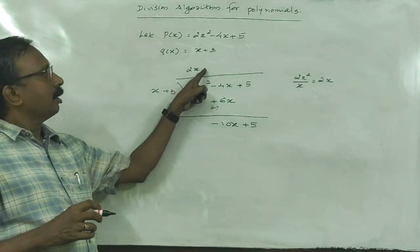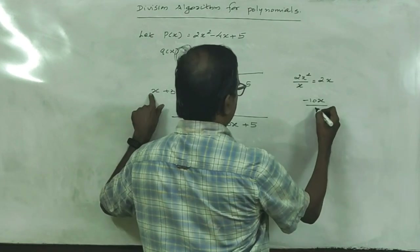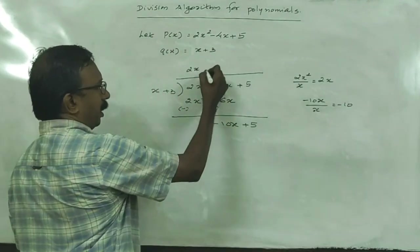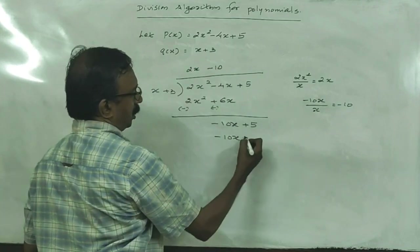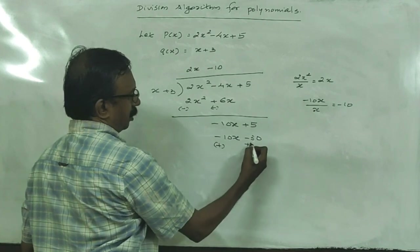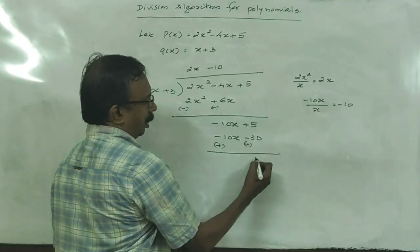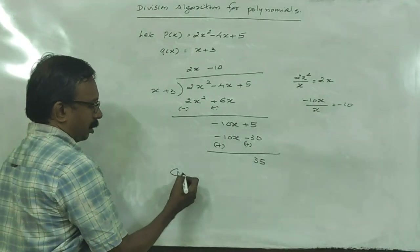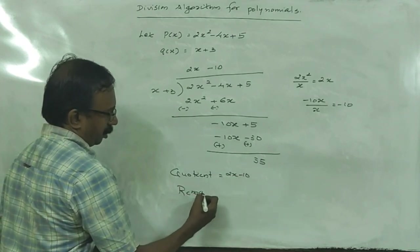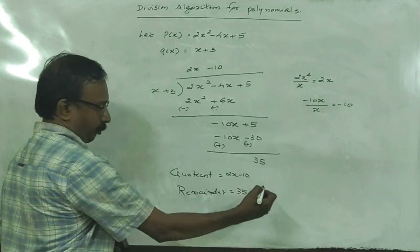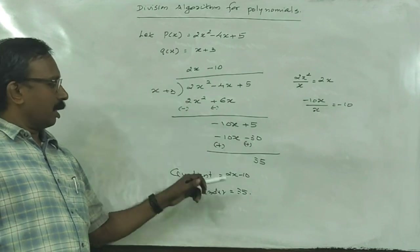Now find the second term in the quotient polynomial: -10x divided by x gives -10. Write -10 here. -10 times x is -10x, -10 times 3 is -30. Again changing the signs and adding: -10x + 10x = 0, 5 + 30 = 35. So the quotient is 2x - 10, and the remainder is 35.